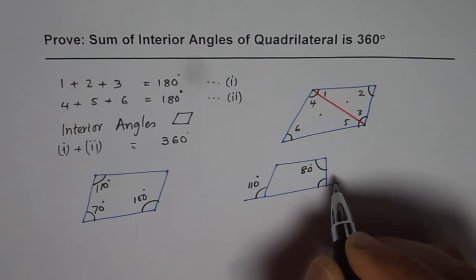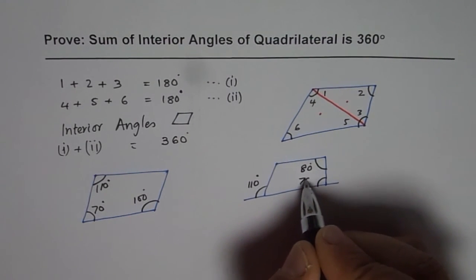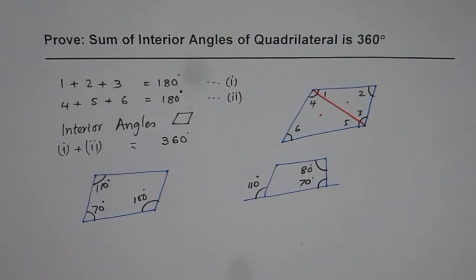And this angle is 80 degrees. And that angle is 70 degrees. Find the missing angles. So that way, you can have some practice on the rule that sum of interior angles for a quadrilateral is always 360 degrees. Thank you.